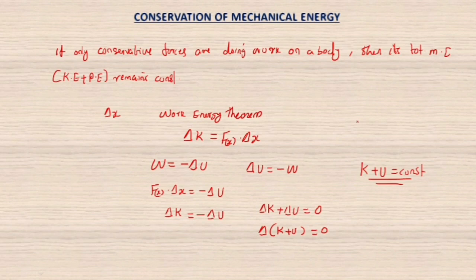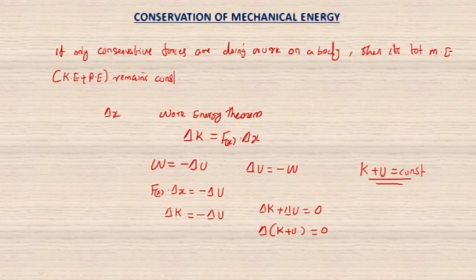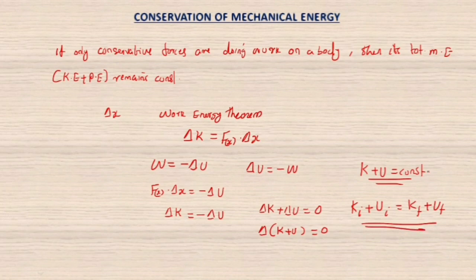K + U = constant means kinetic energy plus potential energy equals a constant value. This proves the conservation of mechanical energy: if only conservative forces act on a body, its total mechanical energy remains constant. Therefore: KE_initial + PE_initial = KE_final + PE_final.